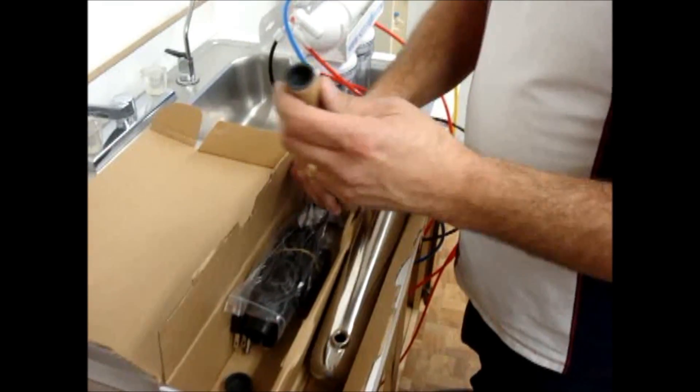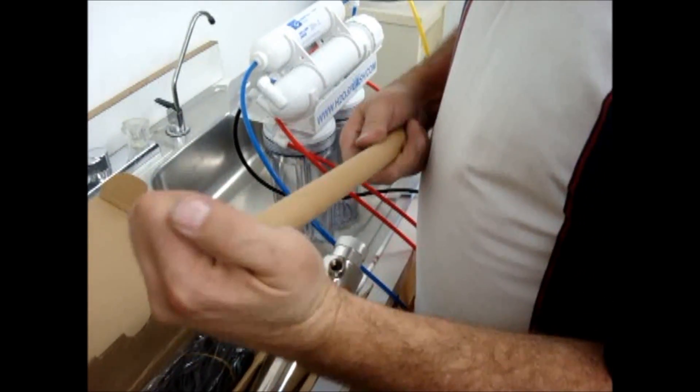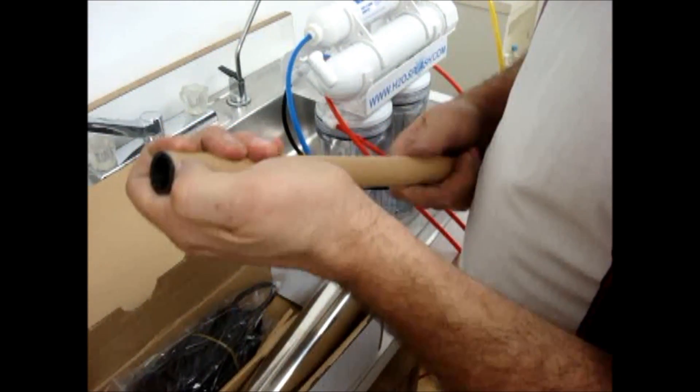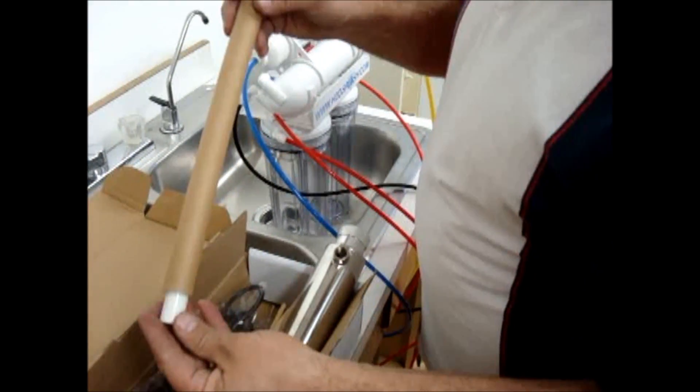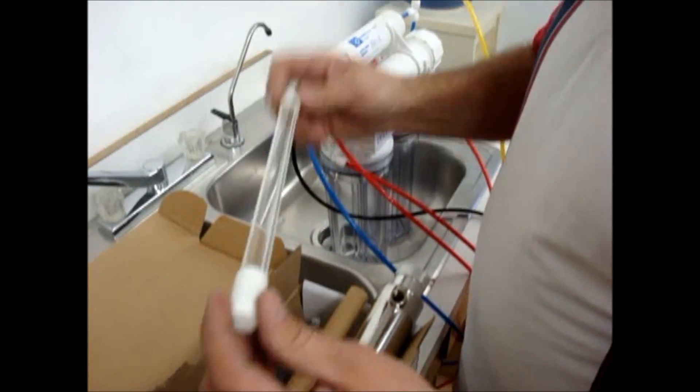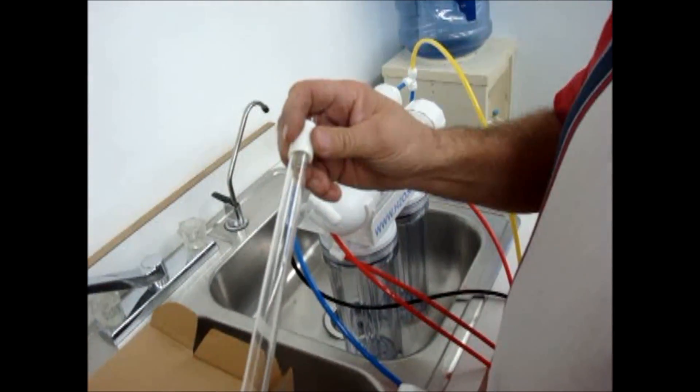Next, find the ultraviolet bulb. Remove one of the end caps from the cardboard tube.